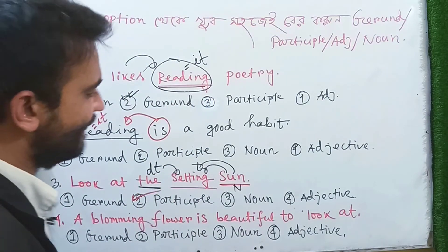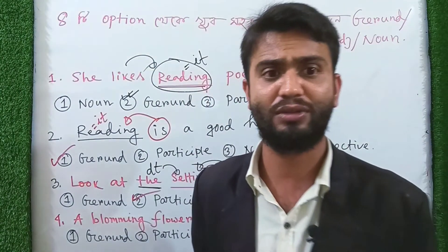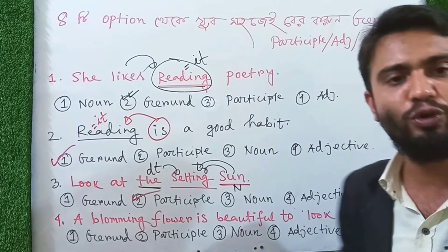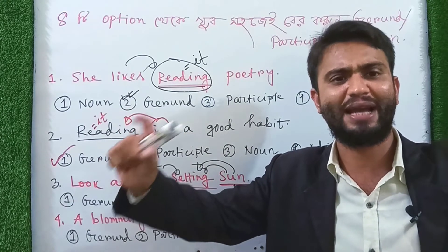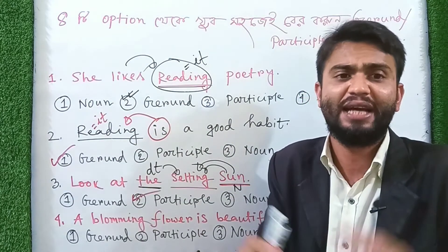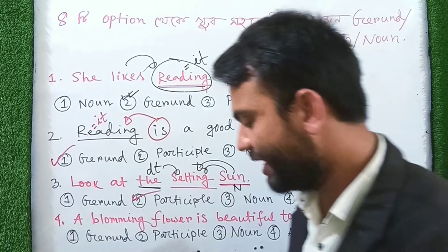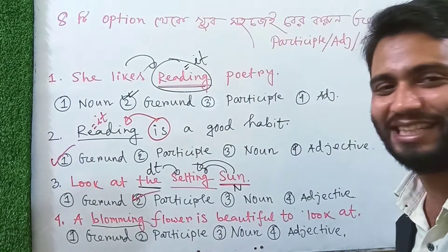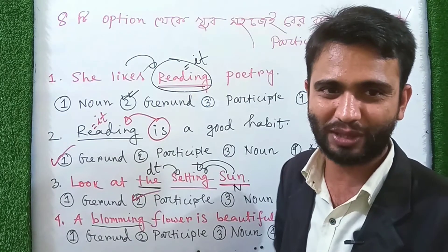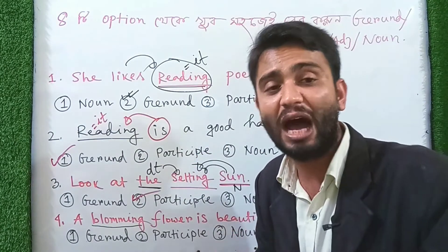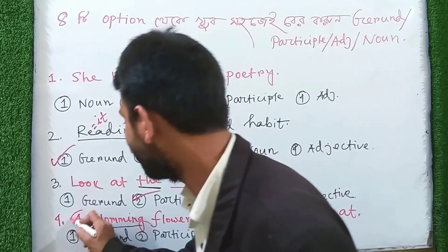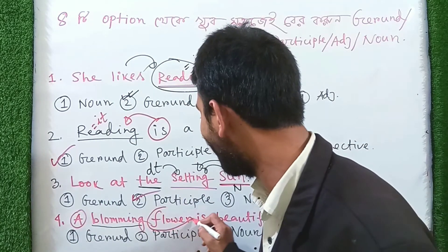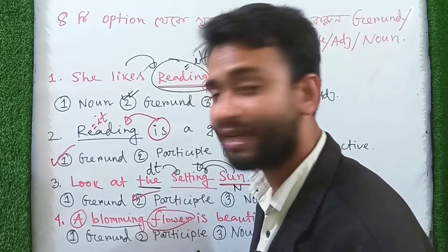So let's have a look at the last example: A blooming flower is beautiful to look at. You can see that it has the word 'blooming.' So what is 'blooming'? This is a participle — noun, adjective. It is the determinant of the noun adjective. The denominator of noun adjective here is 'blooming.'